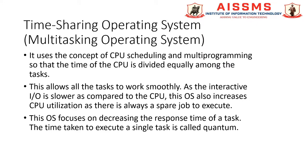Let us take an example. Three processes, namely P1, P2 and P3, are running on the system. Suppose that quantum is 4 nanoseconds. Process P1 will execute for 4 nanoseconds. As soon as it gets over, process P2 starts executing for a duration of 4 nanoseconds.